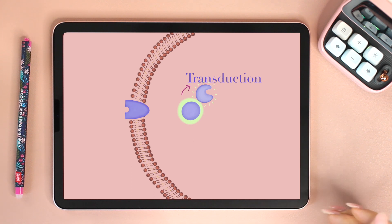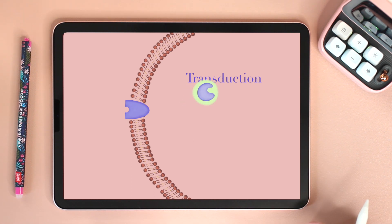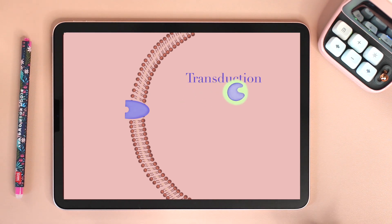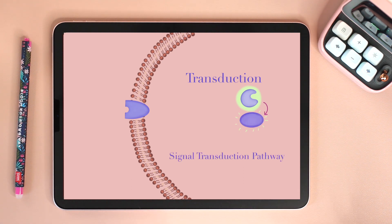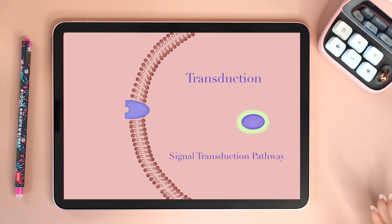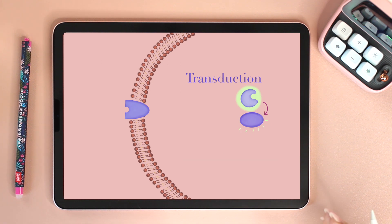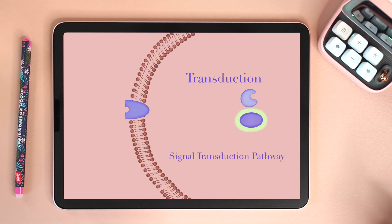What you're seeing here is one molecule getting activated, which activates another molecule, which in turn activates another molecule. This is what is known as a signal transduction pathway.